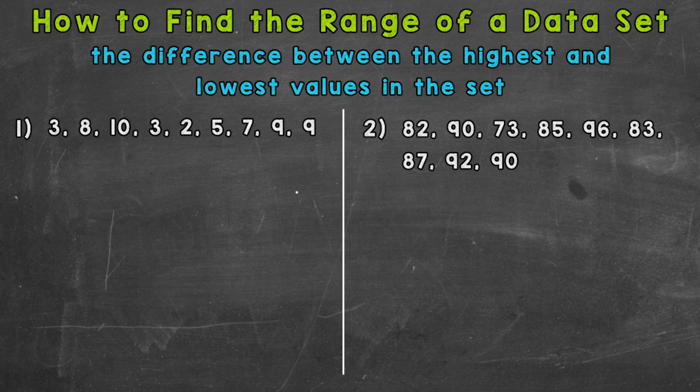Let's jump right into number one. For number one, we have a data set that is out of order, so the first thing we want to do is put it in order from least to greatest. That's going to help organize us and make it much easier to calculate range.